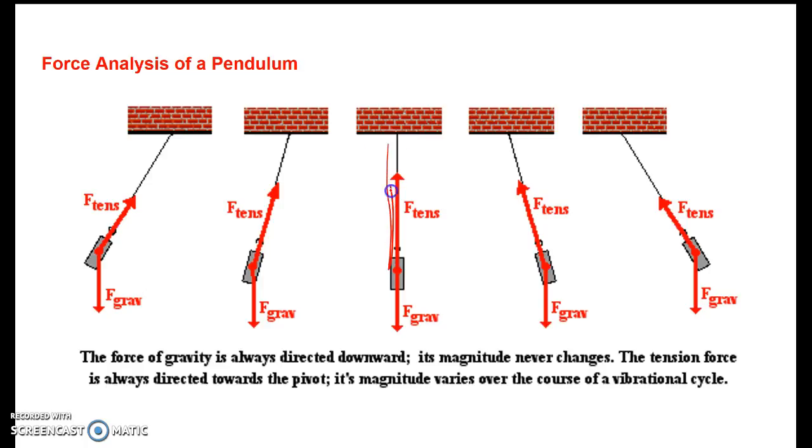First off, you have your string going down and you have your weight. Now, at the point at the bottom of the pendulum, tension and gravity are going to be at a certain amount, but we know they're going to be exactly on the same plane. As the pendulum moves, you can see gravity will stay constant because it goes straight down, but tension will change. And this will continue throughout the movement.